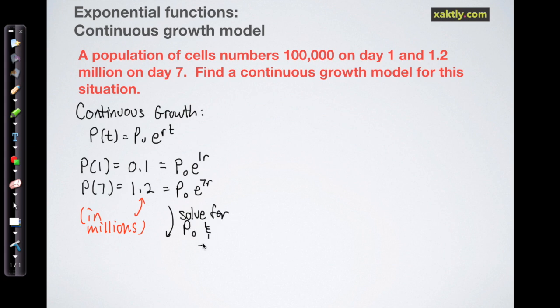So what we have here is two equations and two unknowns and we're going to solve those by solving each of them for P_0 first. And so I get 0.1 over e^r is equal to 1.2 over e^(7r).